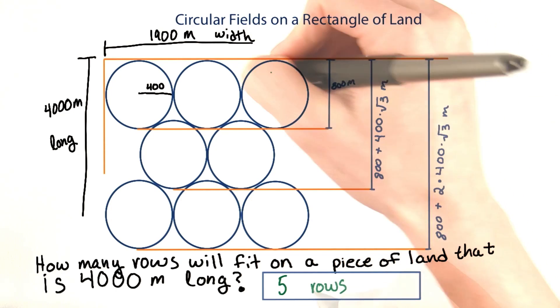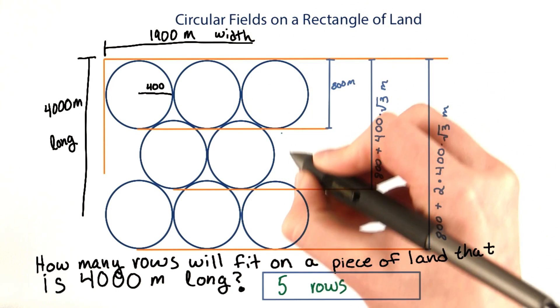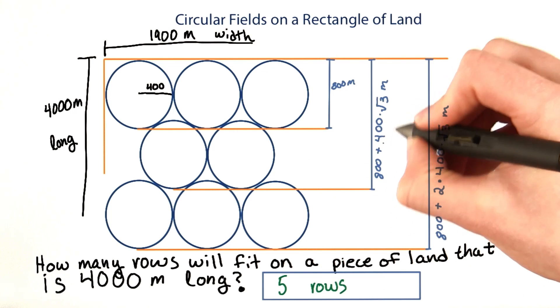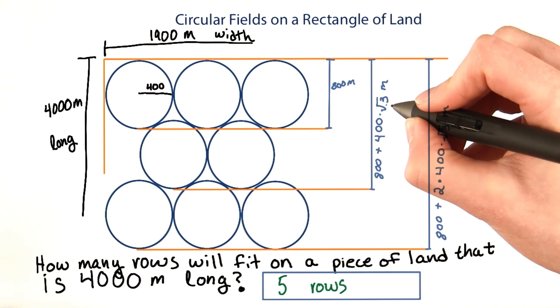The answer should be 5 rows. We'll always have the first one, and then each additional row is another 400 times root 3 meters of length.